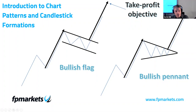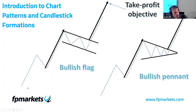You may have heard these formations referred to as half-mast formations. They get this name because it implies the formation forms roughly halfway through the trend, suggesting we could potentially see a similar-sized move following the breakout. I have tested these in a short-term back test and they come out with about a 55% win-loss ratio. However, I must emphasize that I didn't test these in isolation — I tested them alongside other technical structures, including support and resistance and chart psychology.